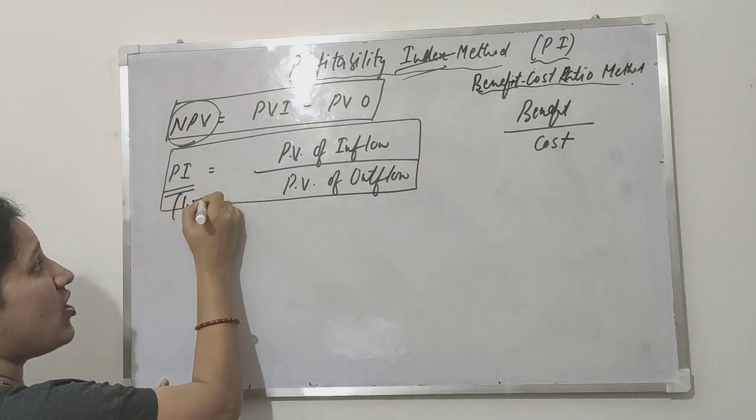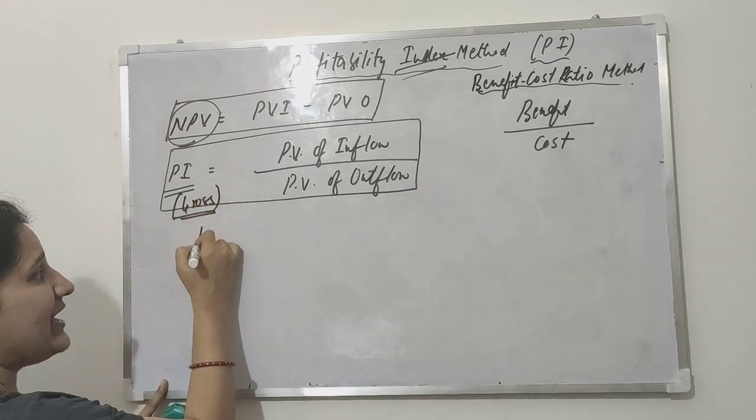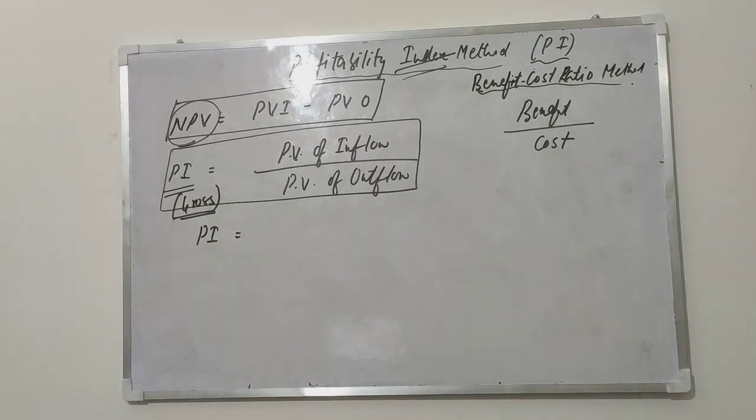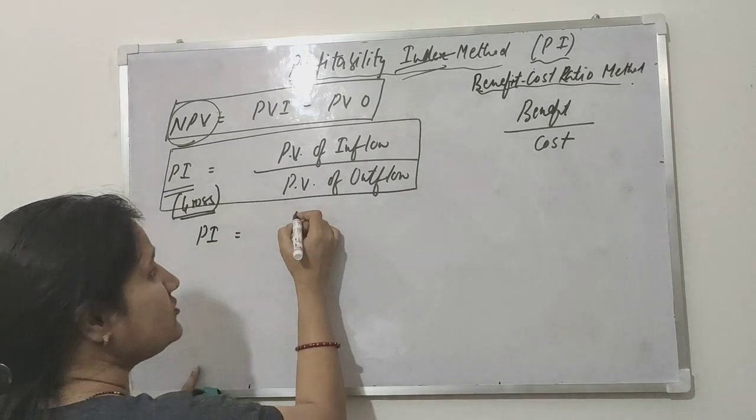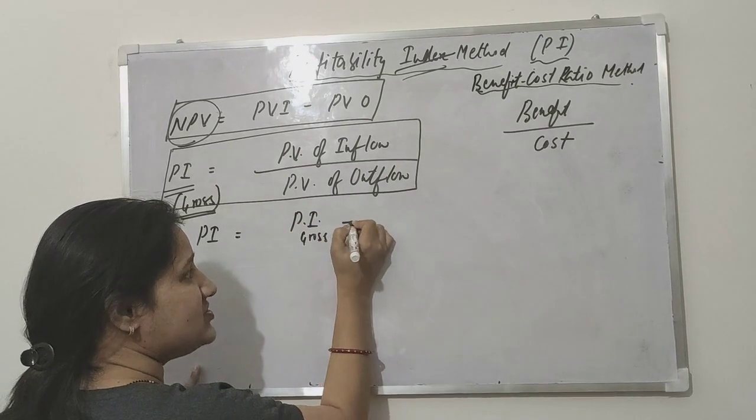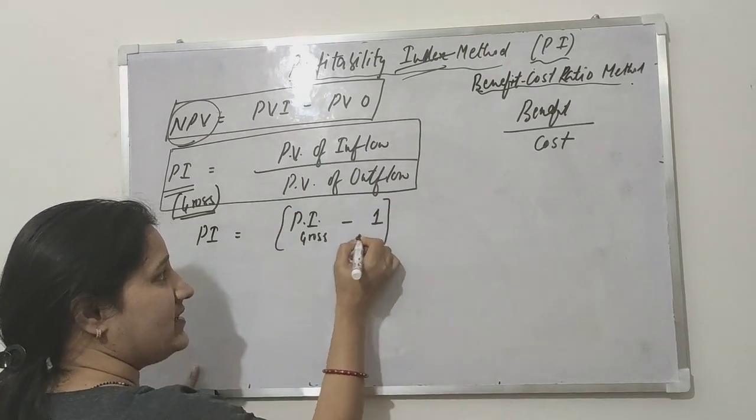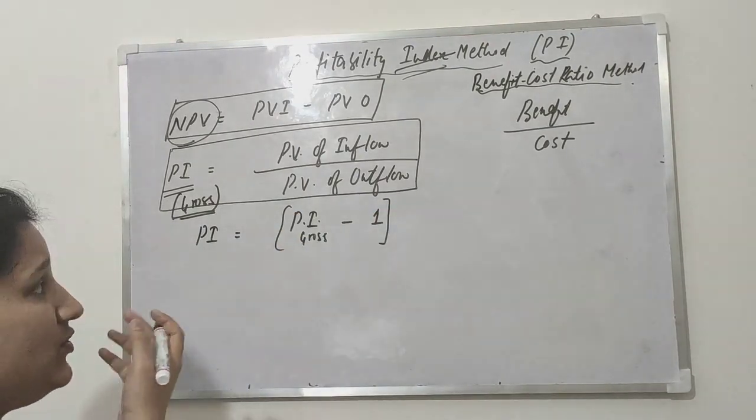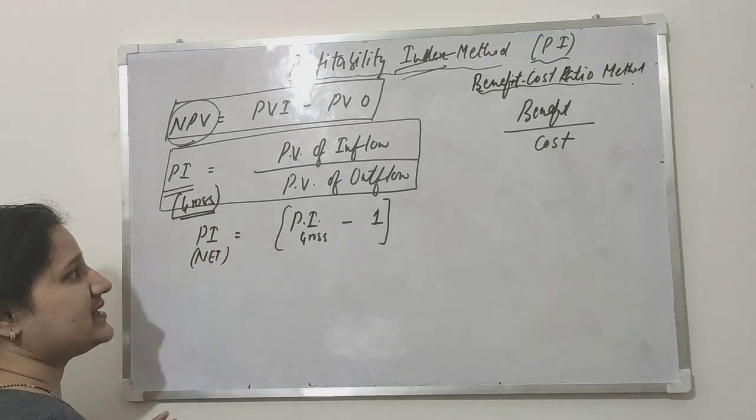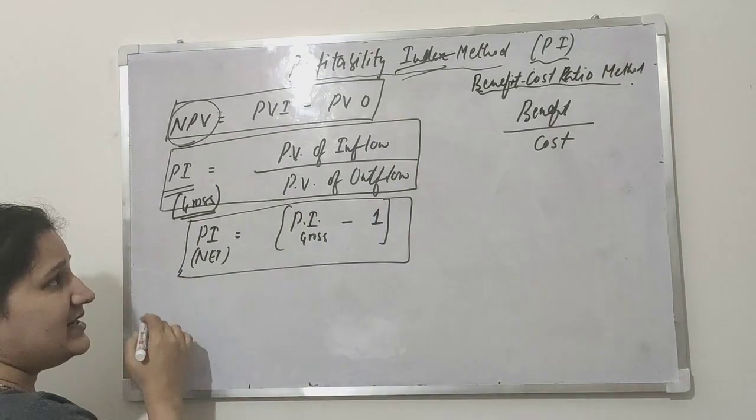This is the formula to calculate gross PI. If you want to calculate PI net, the formula will be: PI gross value minus one from the PI gross value, you will get PI net value.